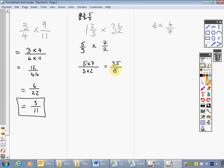Which gives me 35 over 6. That's a top-heavy fraction, so I need to simplify that. How many 6's in 35? Well, 5 6's are 30, so that's 5 in the 30 and 5 remaining. 5 and 5 sixths.